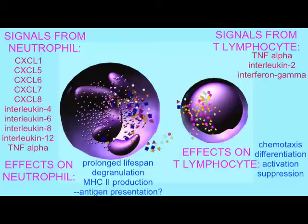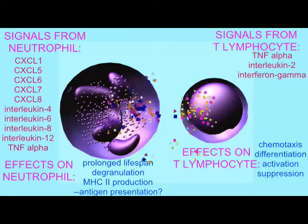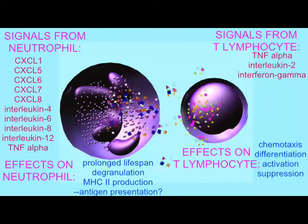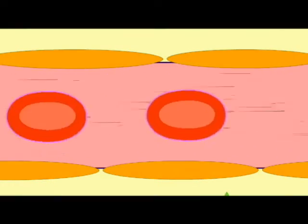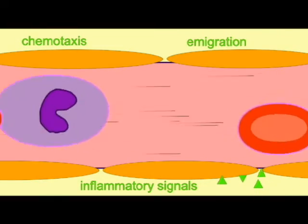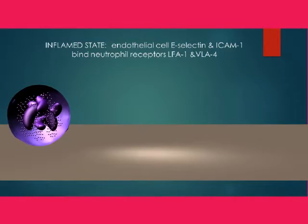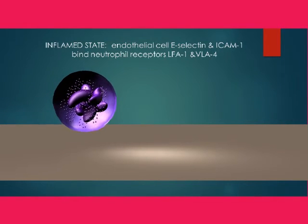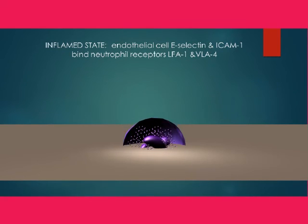Some of these granules are pro-inflammatory and attract other components of the immune system, including the T-cells of the adaptive immune system. Some of these chemicals may activate other components of the immune system, and thus they can have prolonged effects on microbes even after the short-lived neutrophils are no longer present.